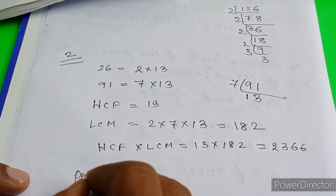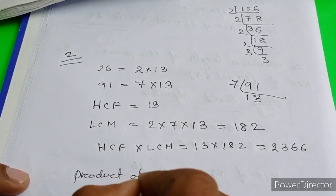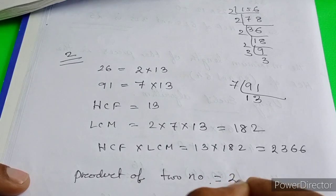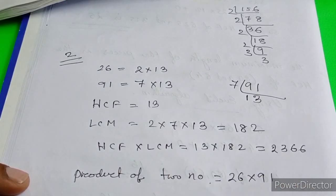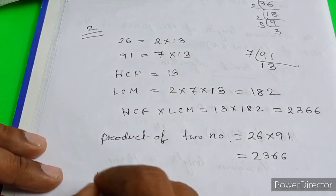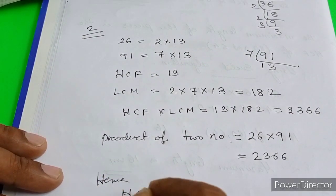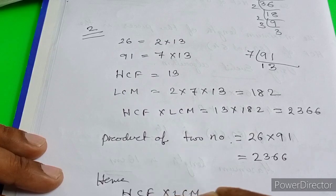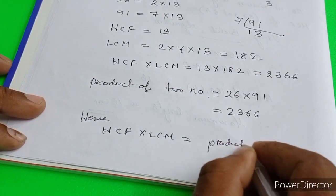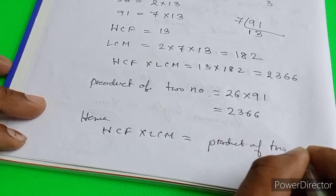Product of two numbers: 26 into 91, this is 2366. Hence, HCF into LCM equals product of two numbers. Hence it is verified.